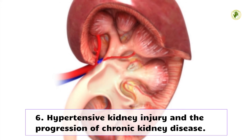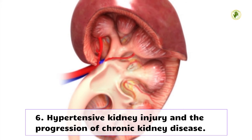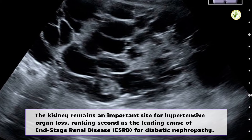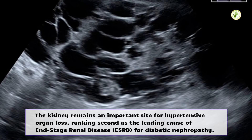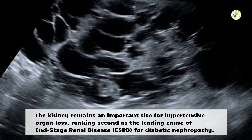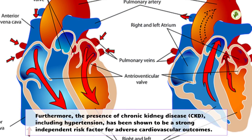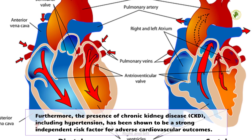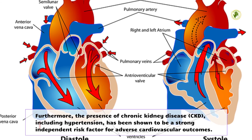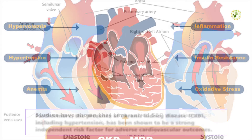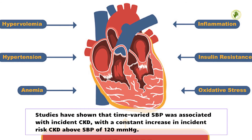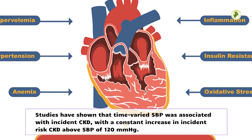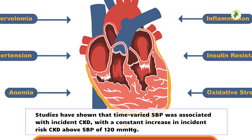Hypertensive kidney injury and the progression of chronic kidney disease: the kidney remains an important site for hypertensive organ damage, ranking second as a leading cause of end-stage renal disease (ESRD) after diabetic nephropathy. Furthermore, the presence of chronic kidney disease (CKD), including hypertension, has been shown to be a strong independent risk factor for adverse cardiovascular outcomes. Studies have shown that time-varied systolic blood pressure (SBP) was associated with incident CKD, with a constant increase in incident risk above SBP of 120 mmHg.